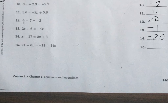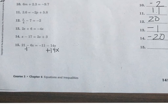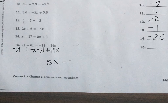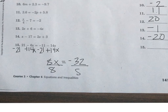For number 15, combine the variable terms and the constant terms. First add 14x to one side, then subtract 21 from both sides. That gives 8x equals negative 32. Divide each side by 8 to get x by itself, and x equals negative 4.